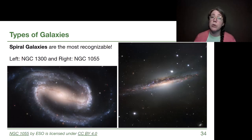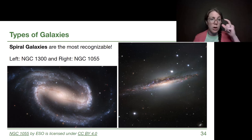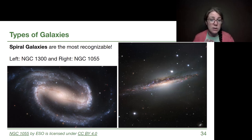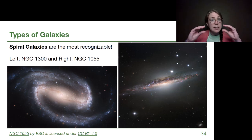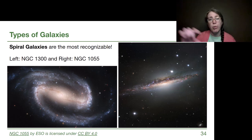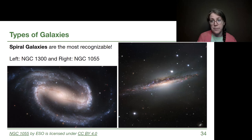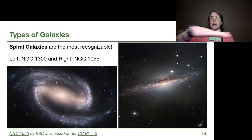Spiral galaxies of any type are the most recognizable. NGC 1300 on the left has a very intense central bar — it is a barred spiral galaxy, the same category as our Milky Way but with a more intense central bar. NGC 1055 on the right is still identifiable as a spiral because it has that disk shape with the presence of gas and dust, even though the dust is blocking our view. Even if we can't see the spiral arms, spiral galaxies always have a disk where most of the material, especially all the gas and dust, can be found.